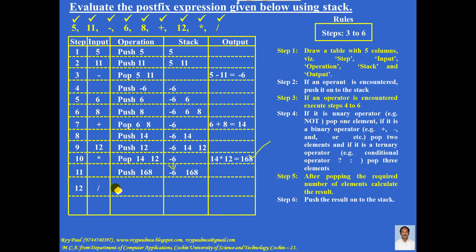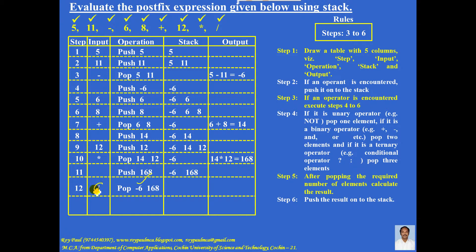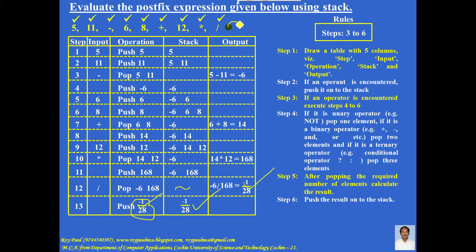The next input is division — it's an operator. Three things must be done. First, it's a binary operator, so two elements must be popped from the stack. After popping, the stack is empty. Second, find the answer: left operand first, followed by operator, followed by right operand — so minus 6 divided by 168 equals minus 1 by 28. Third, push this answer onto the stack. There are no more input symbols, so for this given postfix expression, the final answer is minus 1 by 28.